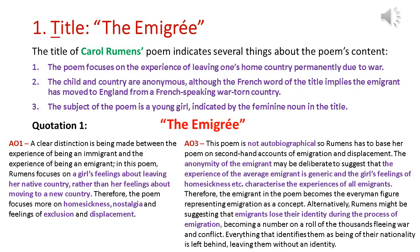It's quite important that this poem focuses on emigration rather than immigration, so Rumens clearly wants to focus on the experience of leaving your homeland rather than the experience of moving to a new country. So lots of the themes within the poem are actually about homesickness, nostalgia — all those memories she has of home — and the feelings of being excluded from her home country and being displaced from where she belongs.